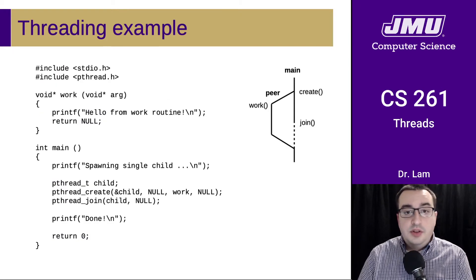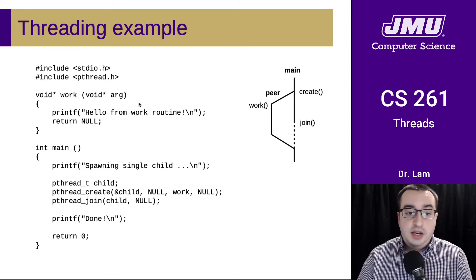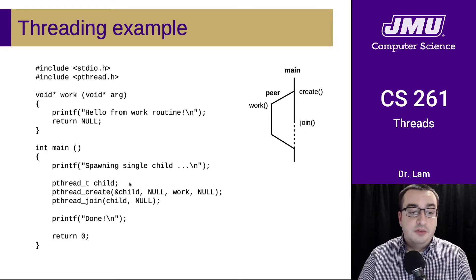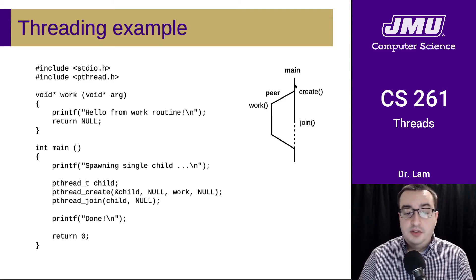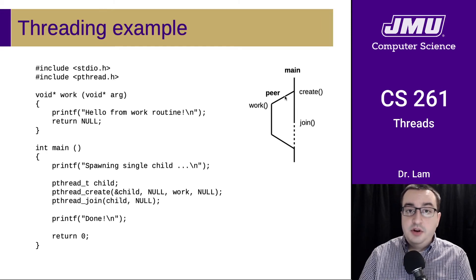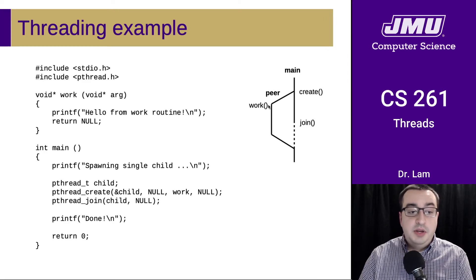Here is a brief example. We include pthread.h at the top. We have a work routine — the function the peer thread will run. In main, we print something out, create a pthread_t struct to track the child thread, then call pthread_create, passing a reference to that struct, null for the attributes, and a reference to the work function as the thread work routine. The thread is then spawned. You can see the logical flow: main executes, calls create, the peer thread branches off and begins running work, and then the main thread calls join to wait for the peer thread to finish. The output is: spawning single child, then hello from work routine, then done.